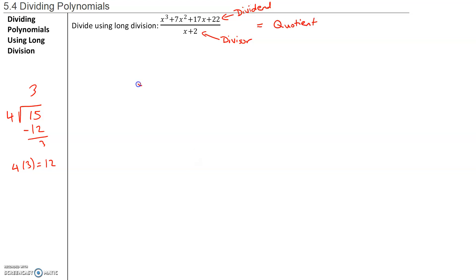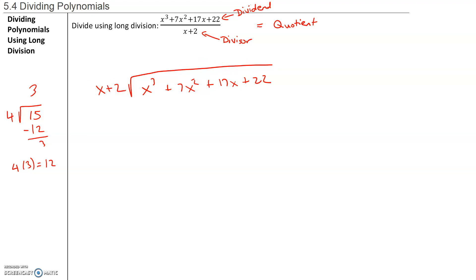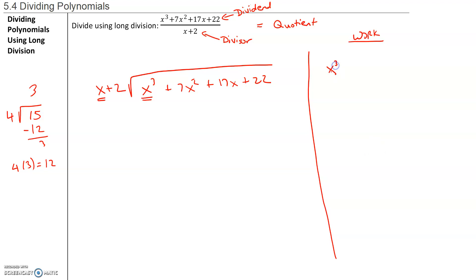Let's set this up. The dividend we're going to put inside the division problem: x cubed plus 7x squared plus 17x plus 22, and we're going to divide this by x plus 2. The dividend goes inside the division problem and the divisor goes outside. Now the quotient is all about the first term of the divisor and the first term of the dividend. We're taking the first term of the dividend, which is x cubed, and dividing that by x — only the first term of the dividend by the first term of the divisor.